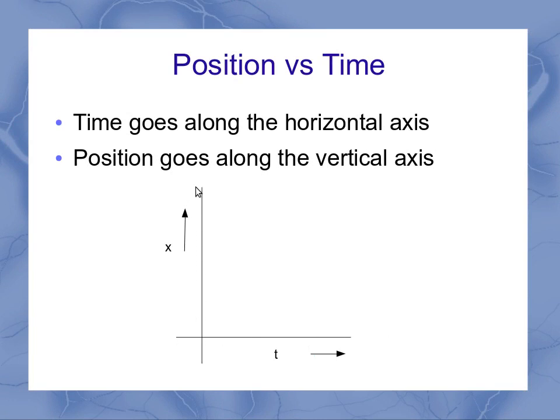The vertical axis is for the dependent variable, which is your position. Even if it's a horizontal position, we're going to chart that position along the vertical axis. So this could be x or y, but the vertical axis is always for your position.